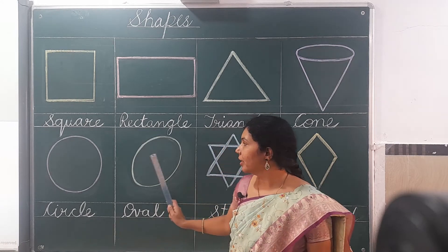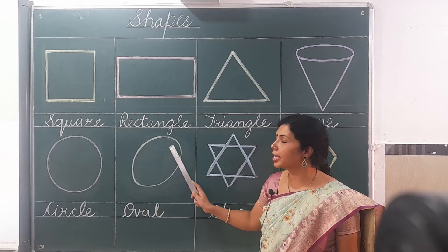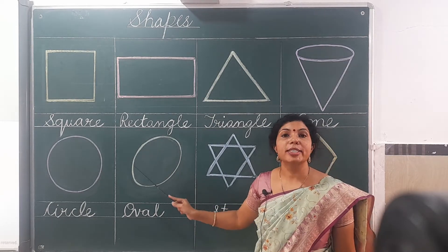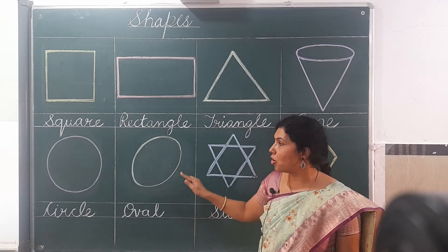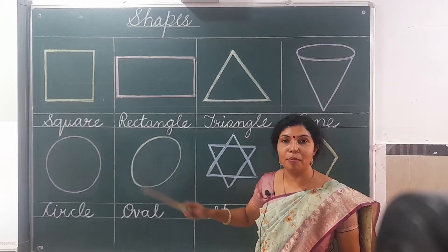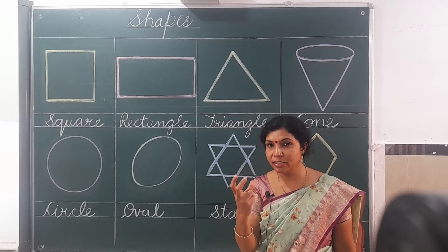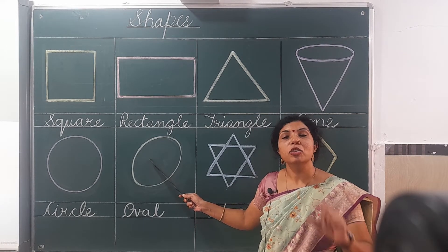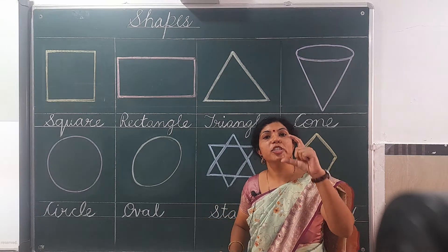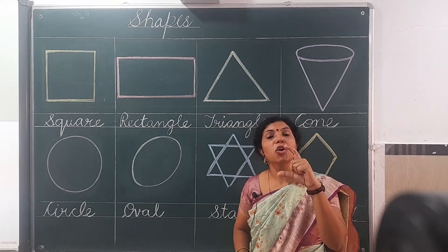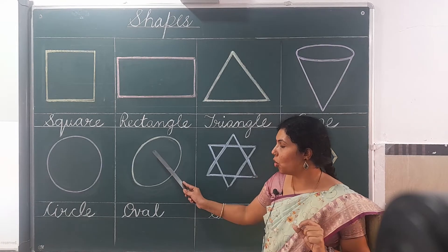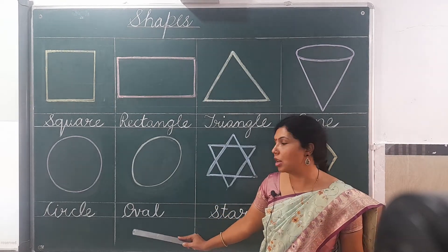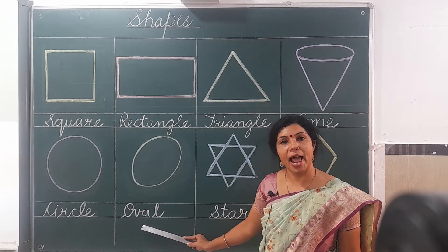This is also a circle shape but not totally round — it is in egg form. You have seen an egg; this is that form. So it is called oval. The shape of an egg is oval — O, V, A, L — oval.